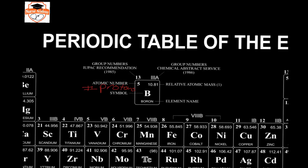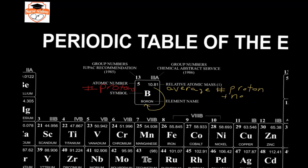This second number, which will have decimal places and is often at the bottom underneath the name of the element, is the relative atomic mass or average atomic mass. This is the number of protons plus neutrons, but for a mixture of isotopes.